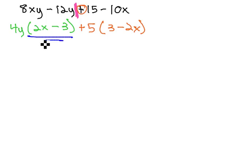Our goal in factoring by grouping is to find matching binomial factors. We have 2x, minus 3, and 3, minus 2x. Are these the same?